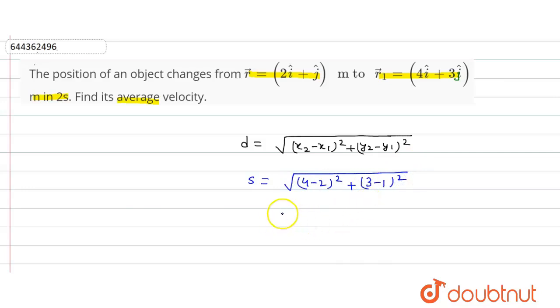That is equal to s equals under root of this will be 2 square plus this will be 2 square.